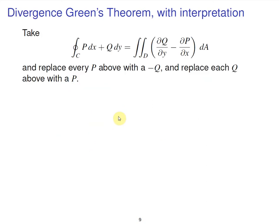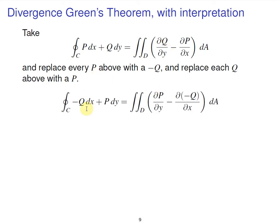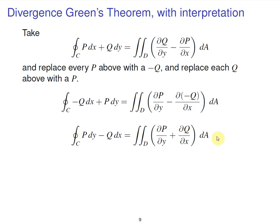Now, if you take that version of Green's theorem and replace each P with negative Q and each Q with positive P, you'll get a new theorem. Pause the video and try it: replace every P with negative Q, and replace each Q with a positive P, then simplify a little bit. From direct replacement, that P was replaced with negative Q, and the other P was replaced with negative Q as well. Switching the order of terms, negative and negative gives positive, and you get this result. This is another standard version of Green's theorem.